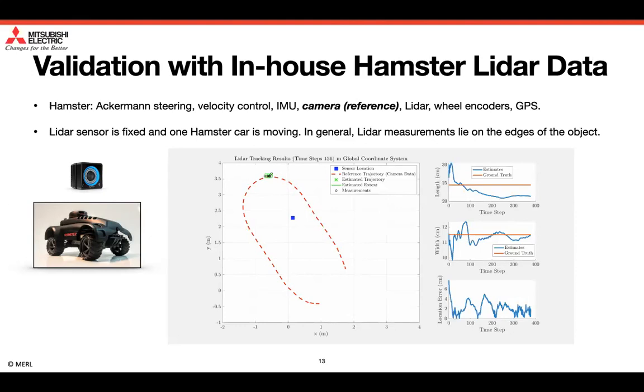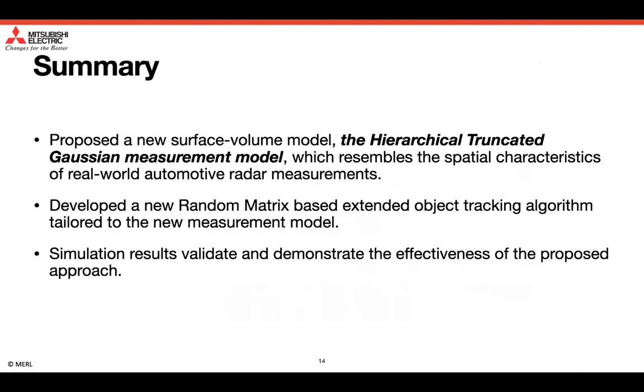To summarize, in this paper, we have proposed a new surface volume model, the hierarchical truncated Gaussian measurement model, that resembles the spatial characteristics of real-world automotive radar measurement. We have also developed a new random matrix-based extended object tracking algorithm, tailored to the new measurement model. The simulation results have validated and demonstrated the effectiveness of the proposed approach. Thanks for watching this video.